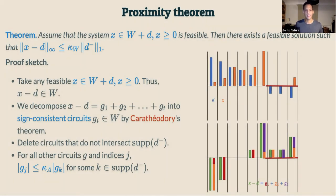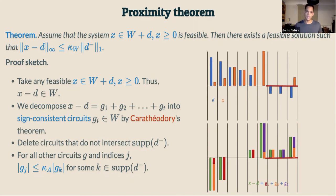Our central proximity theorem is as follows. Assume the primal system — x in W + D, x non-negative — is feasible. Then there exists a feasible solution that is at most kappa times the negativity of D away from D. In other words, if D is not non-negative, then x minus D has a lower bound on the norm exactly equal to the supremum norm of D-minus, the negative part of D.